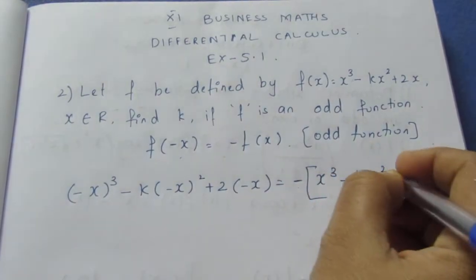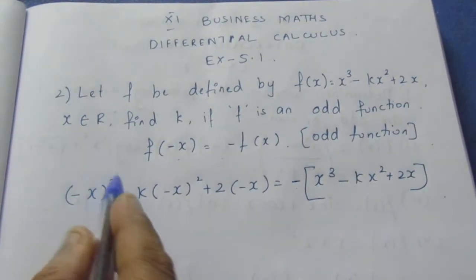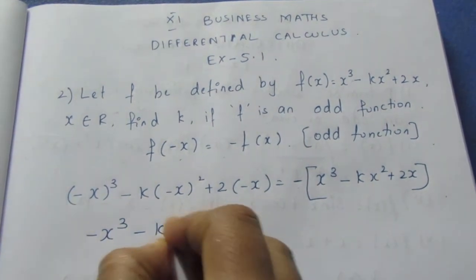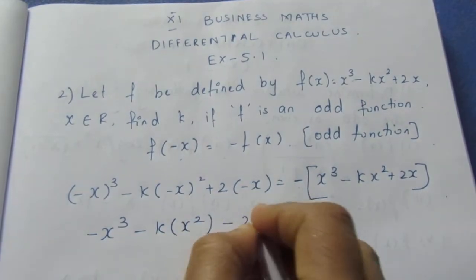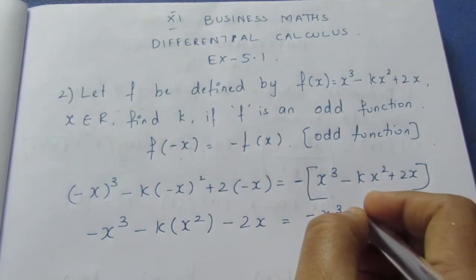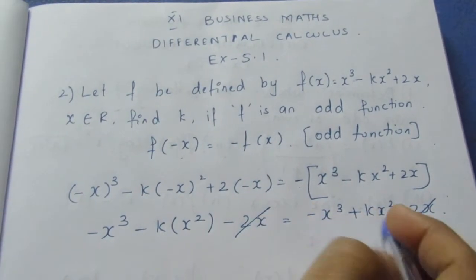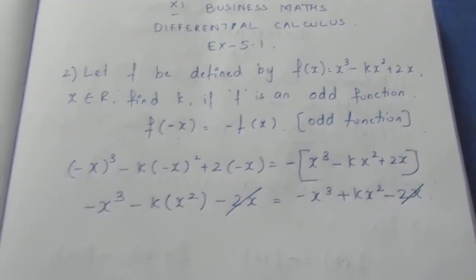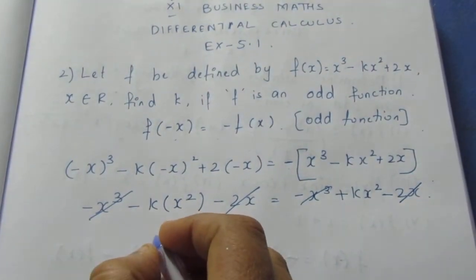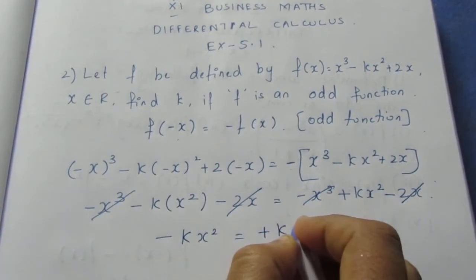Now -f(x) = -(x³ - kx² + 2x) = -x³ + kx² - 2x. Since the power of an odd number carries a minus sign. Comparing f(-x) and -f(x): -kx² must equal +kx².